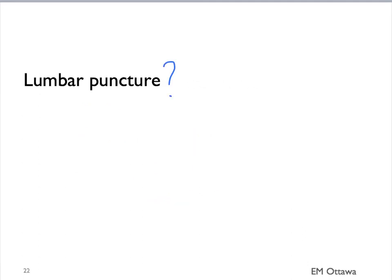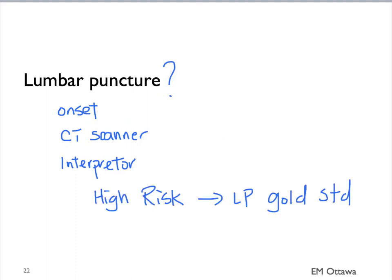In a patient that we're working up for a sentinel bleed, if the CT scan is negative, when should we do the LP? There are different studies in literature that will shape our management. It has to do with the onset of the symptoms, how good the CT scanner is, and who is interpreting the images. In the patient that has extremely high risk for a subarachnoid bleed, a lumbar puncture remains the gold standard. It is best to discuss each case with your attending physician to decide on management.